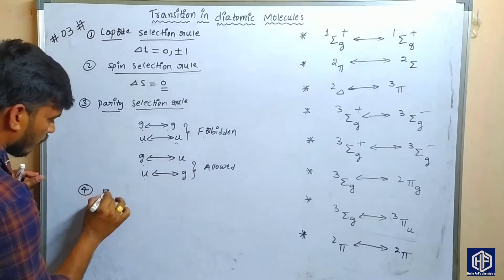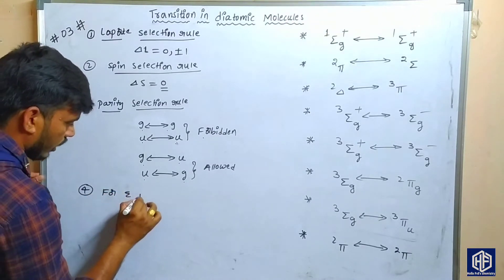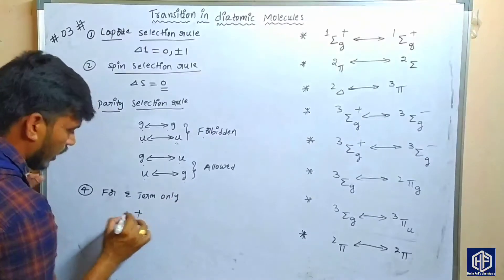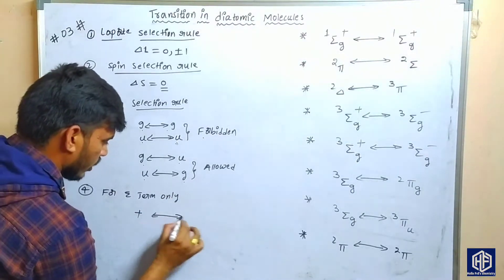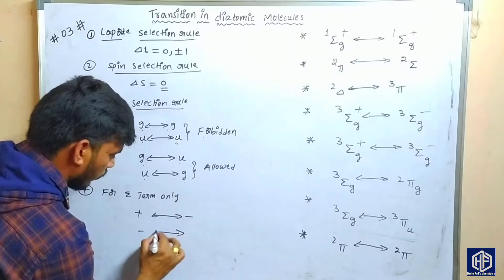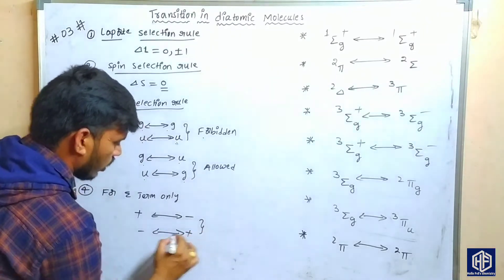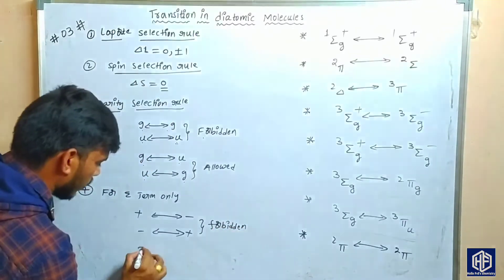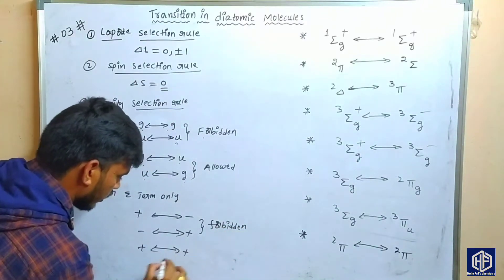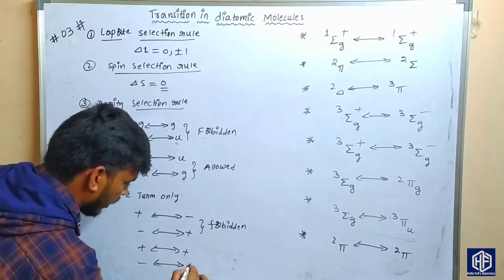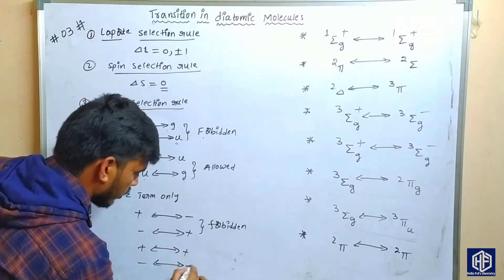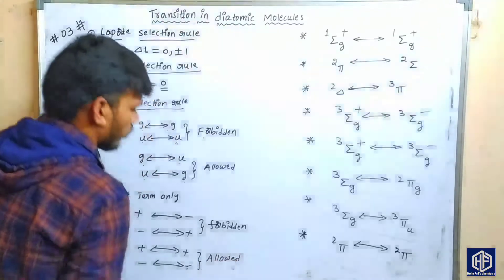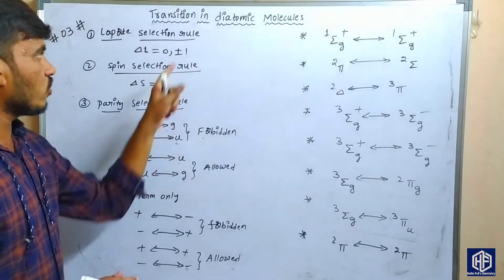The fourth rule applies to sigma terms only. For a sigma term, plus-to-negative and negative-to-plus transitions are forbidden transitions. Plus-to-plus and negative-to-negative are allowed transitions.